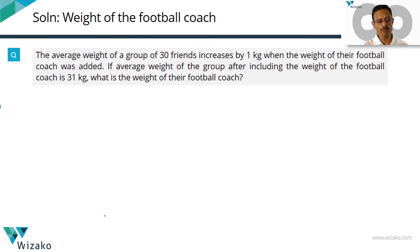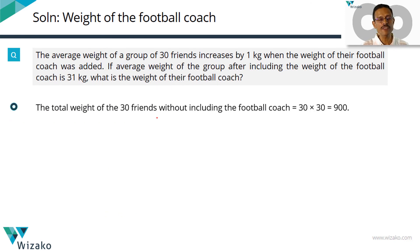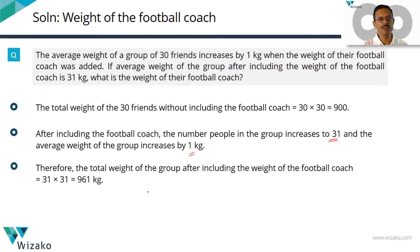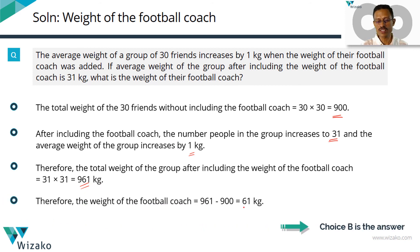To quickly recap in printed form: the total weight of 30 friends without the coach is 30 times 30 — 30 people with an average weight of 30. When the coach is added, the number increases by 1 to 31, and the average weight also increases by 1 to 31. So the new sum of weight including the coach is 31 times 31, which is 961. With the coach 961, without the coach 900 — so the weight of the coach is the difference, equal to 61 kgs. Choice B is the correct answer.